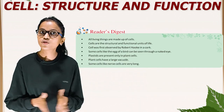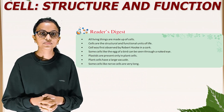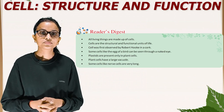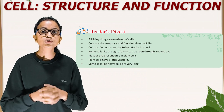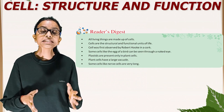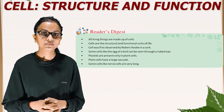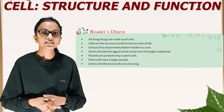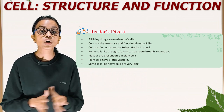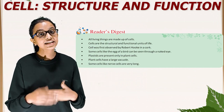Students, it's time for a quick recap. All living things are made up of cells. Cells are the structural and functional units of life. Cells were first observed by Robert Hooke in cork. Some cells like the eggs of a bird can be seen with the naked eye. Plastids are present only in plant cells. Plant cells have a large vacuole. Some cells like nerve cells are very long. That's all for today — we'll meet in the next class. Bye!